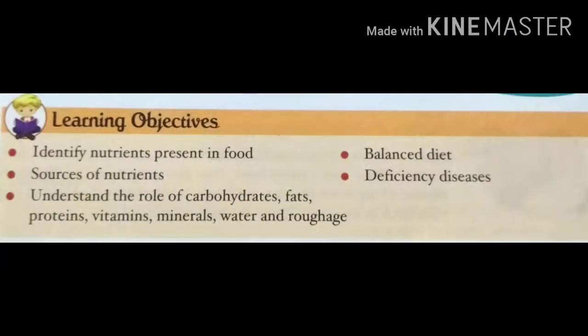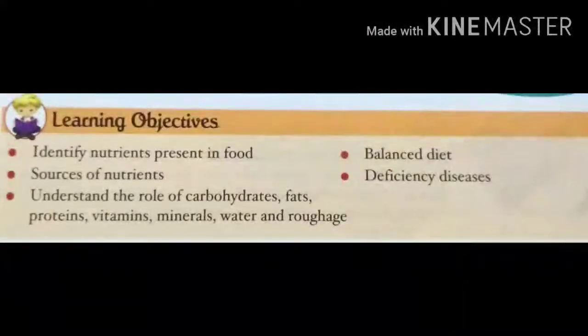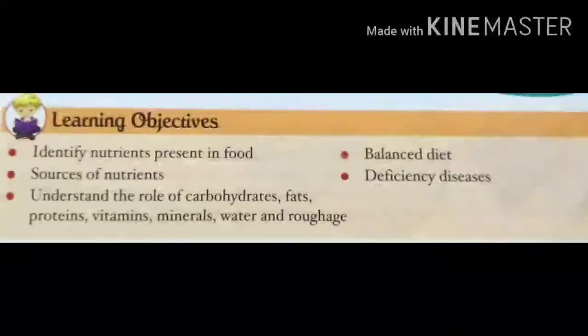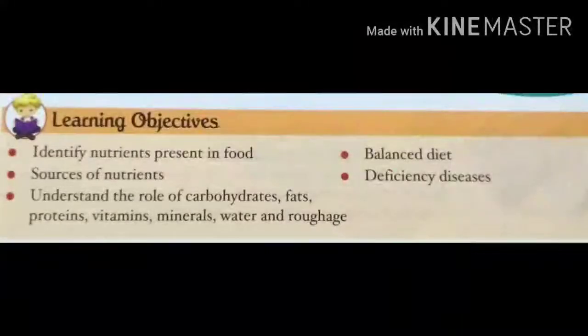In this chapter, firstly we see the Learning Objective. In this chapter, we learn to identify nutrients present in food, then the source of nutrients. After that, we understand the role of carbohydrates, fats, proteins, vitamins, minerals, water, and roughage. Then balanced diet, and then deficiency diseases. In this chapter, we will read these points.